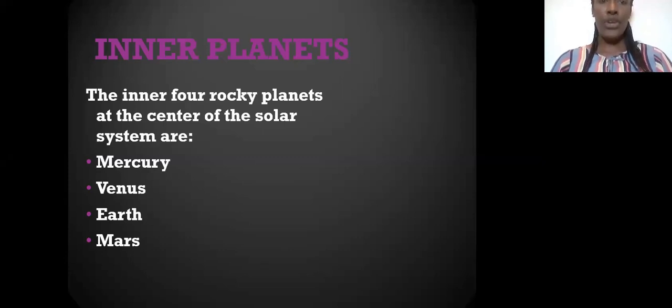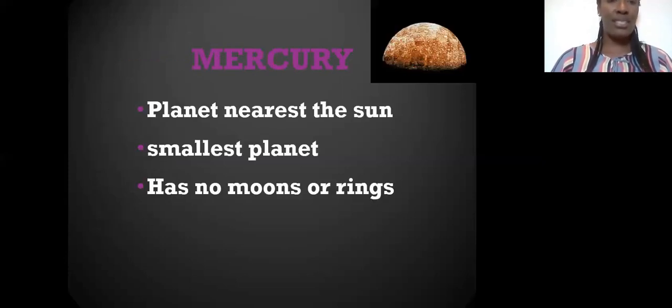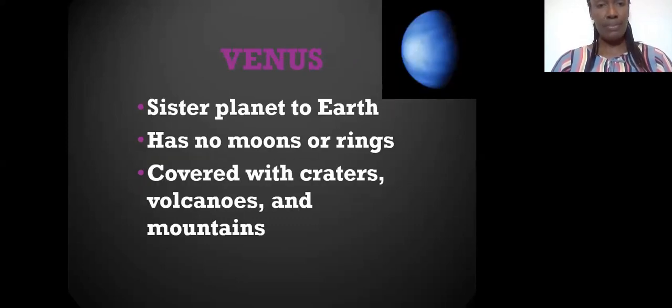Mercury is the closest planet to the Sun and it is the smallest planet. It has no moons or rings. Venus is the sister planet to the Earth. It has no moons or rings, but it is covered with volcanoes, mountains, and springs similar to planet Earth. That's why we call it the sister planet.